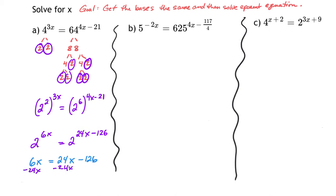Subtracting 24x from both sides gives negative 18x equals negative 126. Dividing by negative 18 gives x equals 7. That's it.